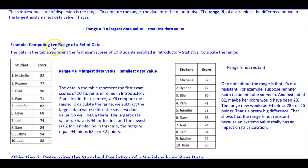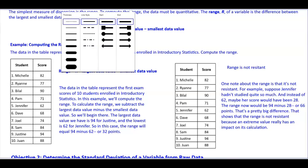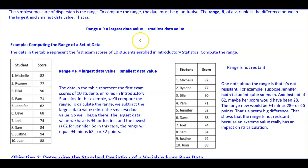For example, we want to be able to compute the range of a set of data. In our example here, it says the data in the table below represent the first exam scores of 10 students enrolled in introductory statistics. Compute the range. The range is equal to the largest data value minus the smallest data value. If we take a look at the largest data value, we can see that Justine represents the largest data value. And then we can see that Jennifer has a score of 62. So that is the smallest data value. So if we take 94 and then we subtract 62, which again, we want to find the range, well, that's going to give us a value of 32.